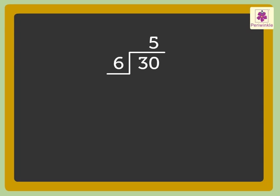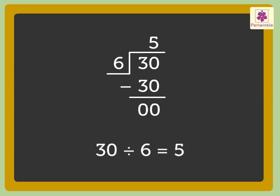Now, write 30 below the dividend. Subtract 30 from the dividend. We get 0 as the remainder. So, we say 30 divided by 6 is equal to 5. Wasn't that quick?